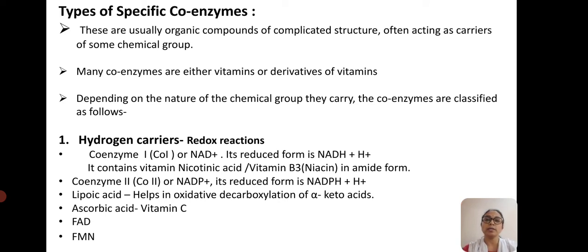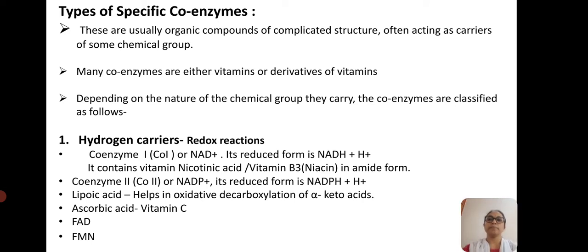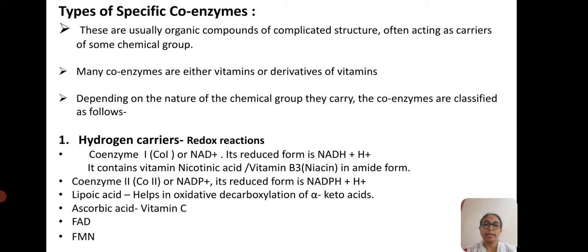Coenzyme 2 (Co2), also called NADP⁺, has a reduced form of NADPH + H⁺. Lipoic acid is another example, which helps in oxidative decarboxylation of keto acids. Ascorbic acid (vitamin C) and other redox-assisting coenzymes such as FAD (flavin adenine dinucleotide) and FMN (flavin mononucleotide) are also very important for EC1 — oxidoreductase — enzyme activity.